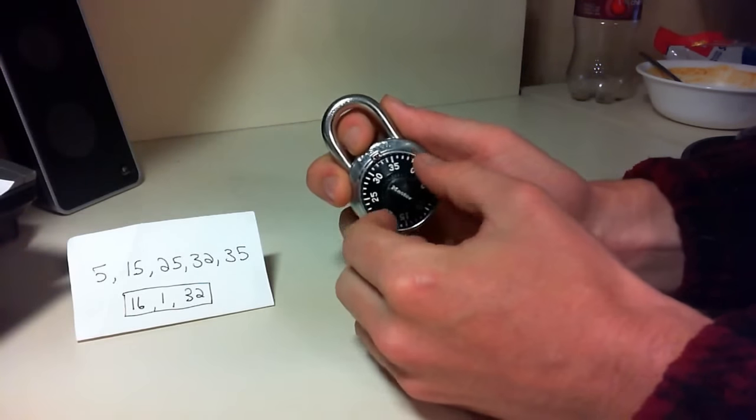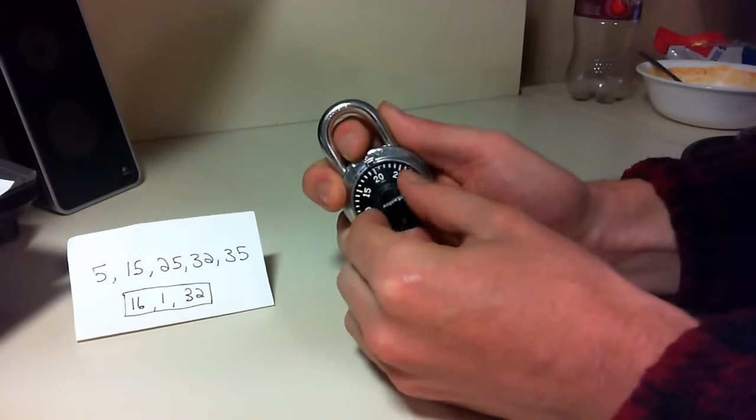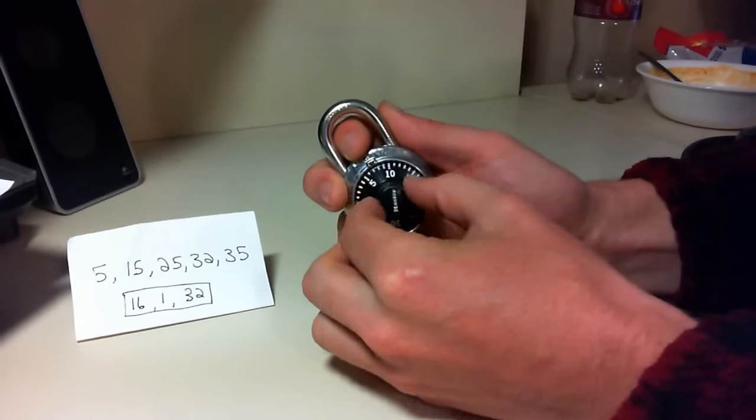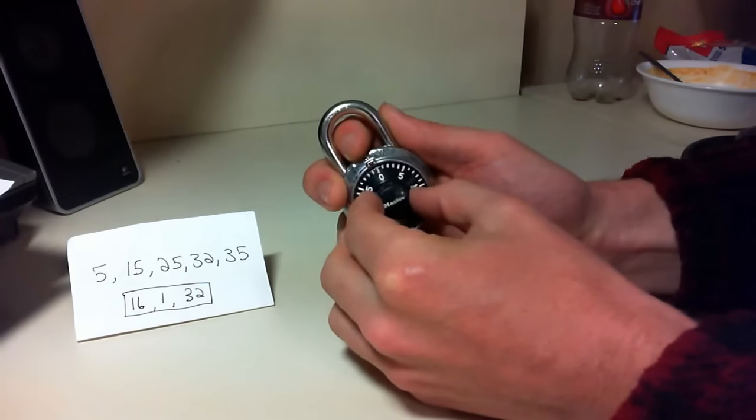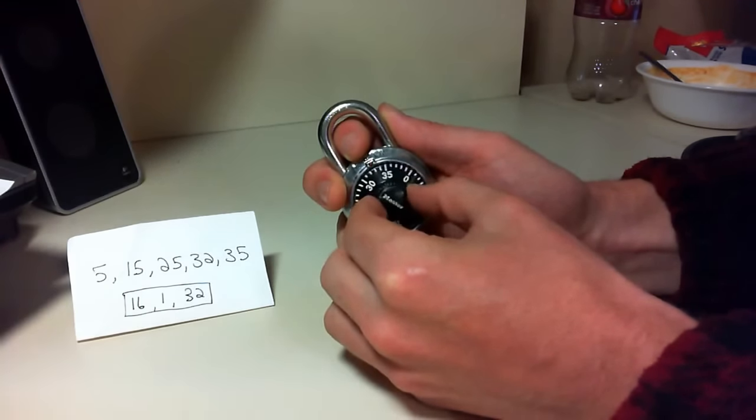So once you have your numbers, you're going to just dial them in, starting out clockwise, dial on your first number, 16, then go counterclockwise, pass the number you just entered, to enter your second number, which is 1, and then back clockwise to our last number, 32.